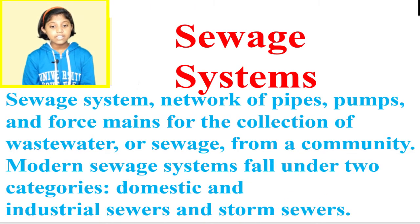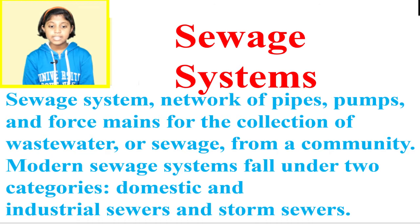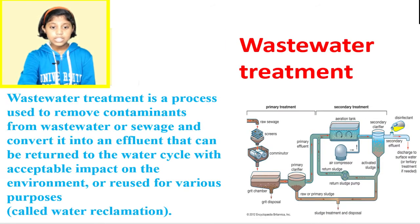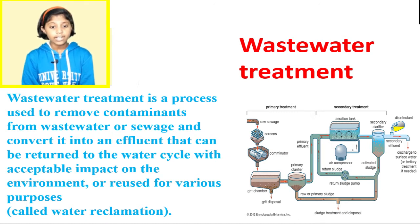Sewage systems. A sewage system is a network of pipes, pumps and force mains for the collection of wastewater or sewage from a community. Modern sewage systems fall under two categories: domestic and industrial sewers, and storm sewers. Wastewater treatment is a process used to remove contaminants from wastewater or sewage and convert it into an effluent that can be returned to the water cycle with acceptable environmental impact or reused for various purposes.